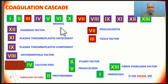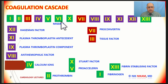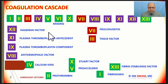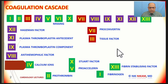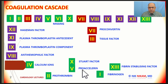The coagulation cascade involves 13 factors from 1 to 13, with the exception of factor 6 which is considered to be the same as factor 5 or 5a. Here are the names of all these 13 factors. Factor 1 is fibrinogen, factor 2 is prothrombin, factor 3 is tissue factor, factor 4 represents calcium ions, and factor 5 is proaxilarin.